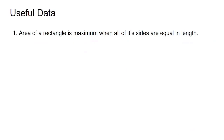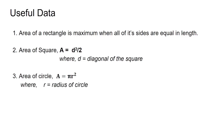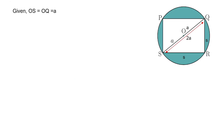We will discuss a few important formulas to solve this problem. First, the area of a rectangle is maximum only when all of its sides are equal in length — that is, the rectangle is actually a square. Area of a square = d²/2, where d is the diagonal of the square. Area of a circle = πr², where r is the radius of the circle.